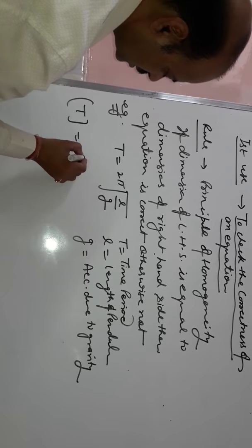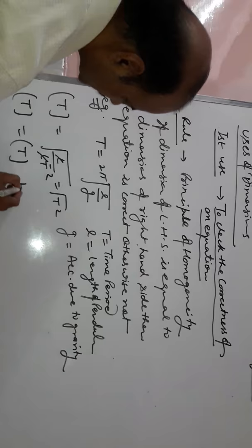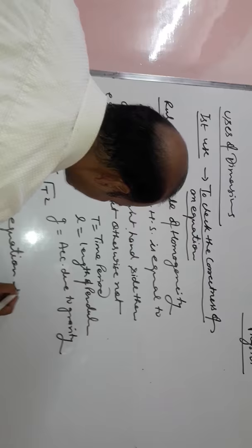T dimension: 2π have no dimension, L upon G is L times LT⁻² gives T². So T equals T, hence equation is correct.